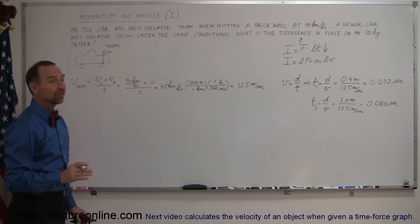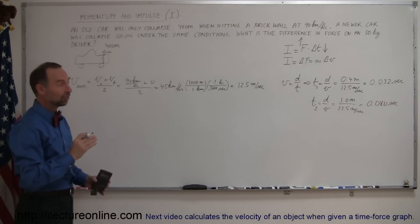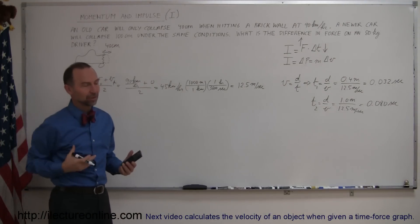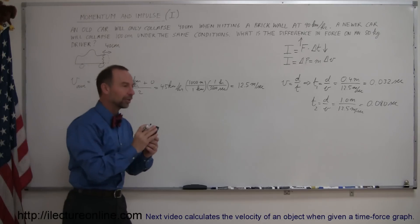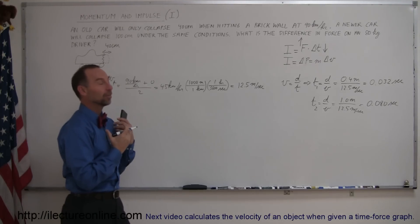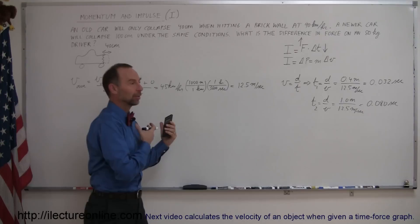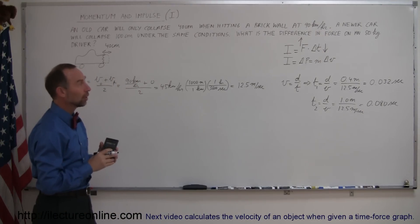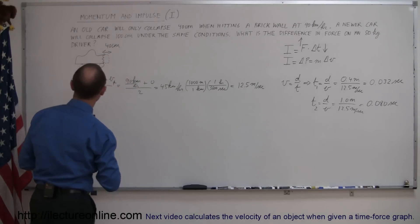Two and a half times as much time means two and a half times less force acting on the driver. Remember the drivers and passengers, they're strapped down with their seat belts, so when they get into a front end collision, the seat belt stops them, but the force that the seat belt will use to push on the passenger and the driver will be much smaller, and therefore not as much injury, not as much pain in the collision.